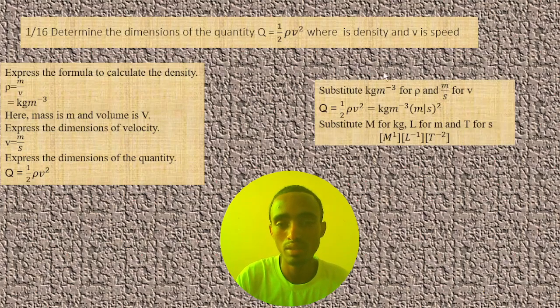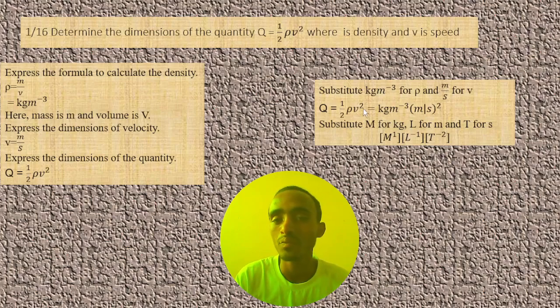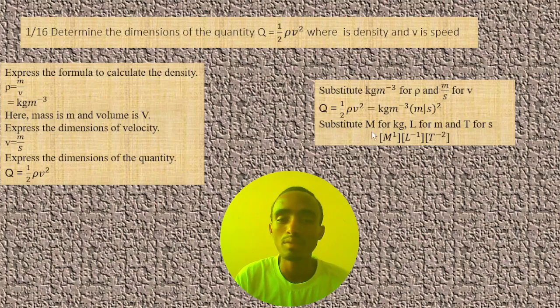Then we can simply substitute this value in the place of density and this value in the place of v, and finally we simplify it. Then 1/2 ρv² equals kilogram per meter cube times meter per second square.